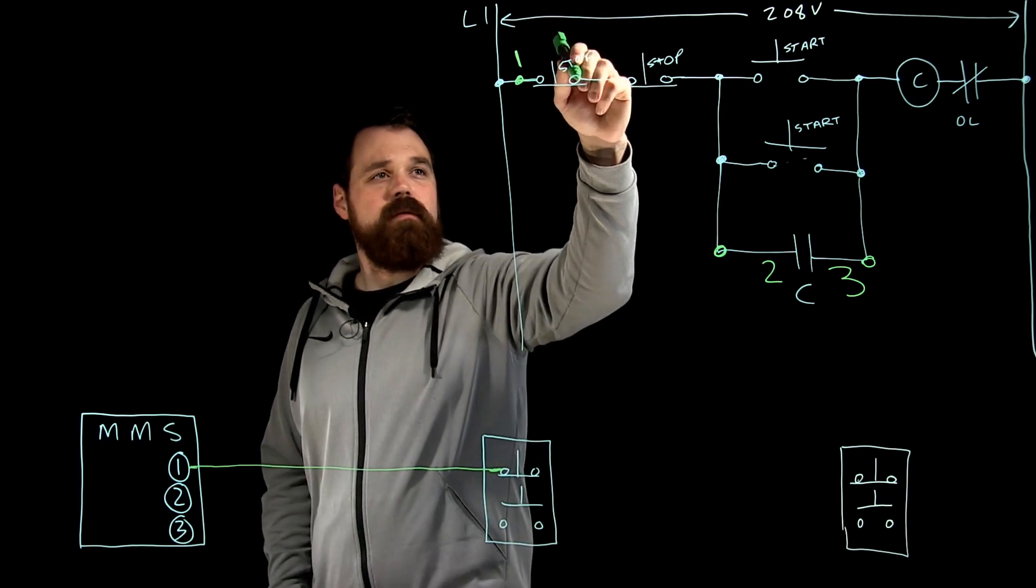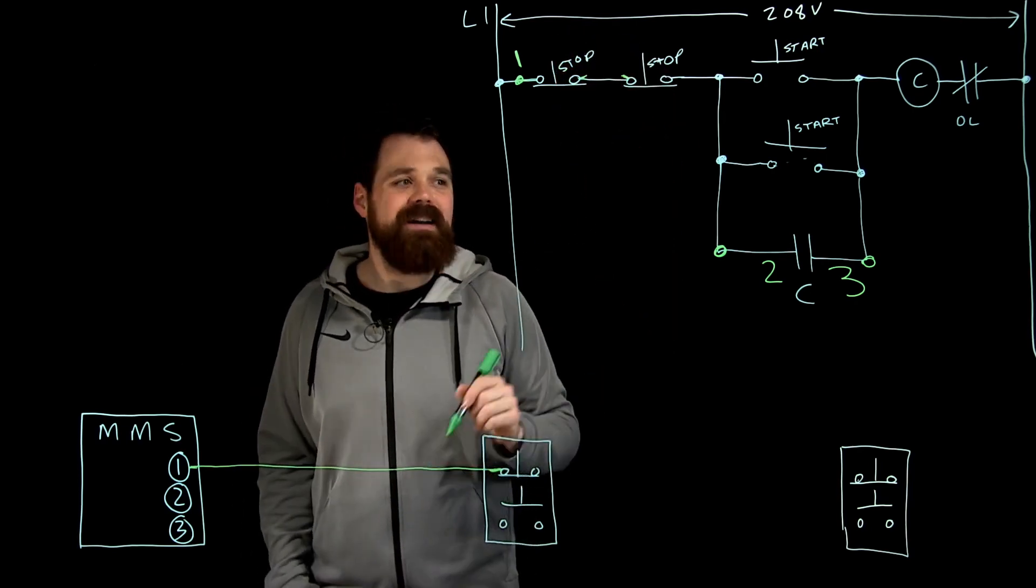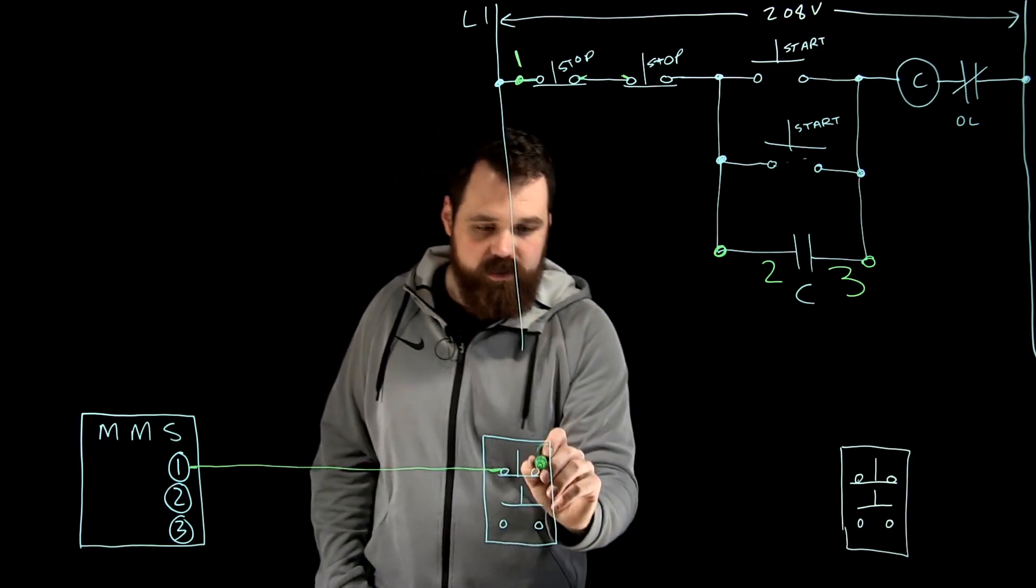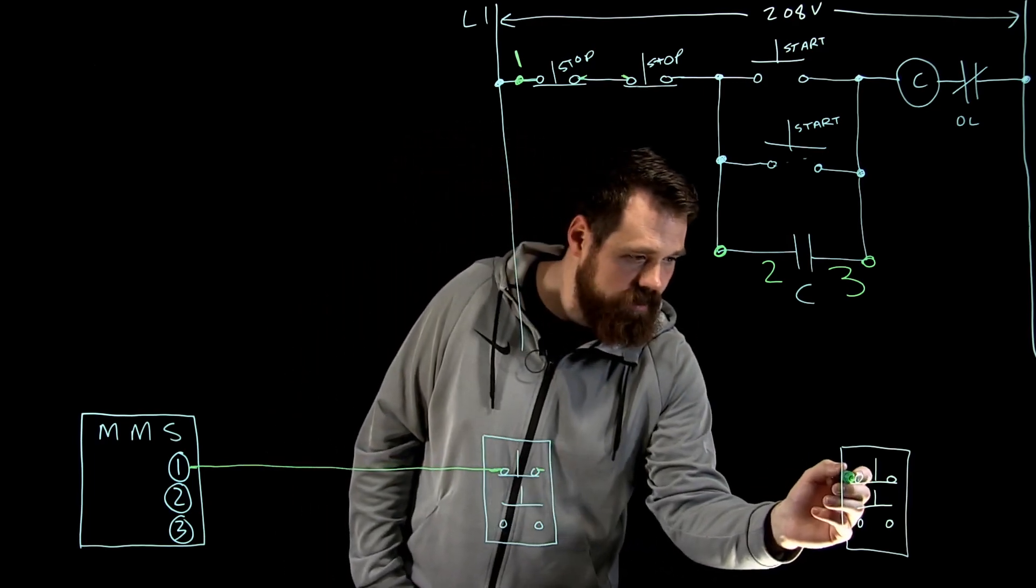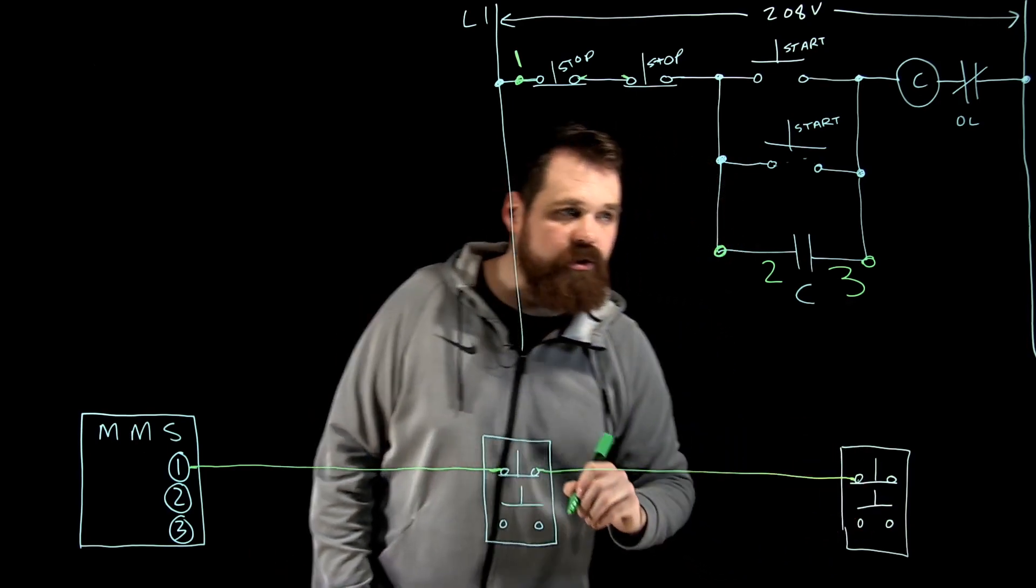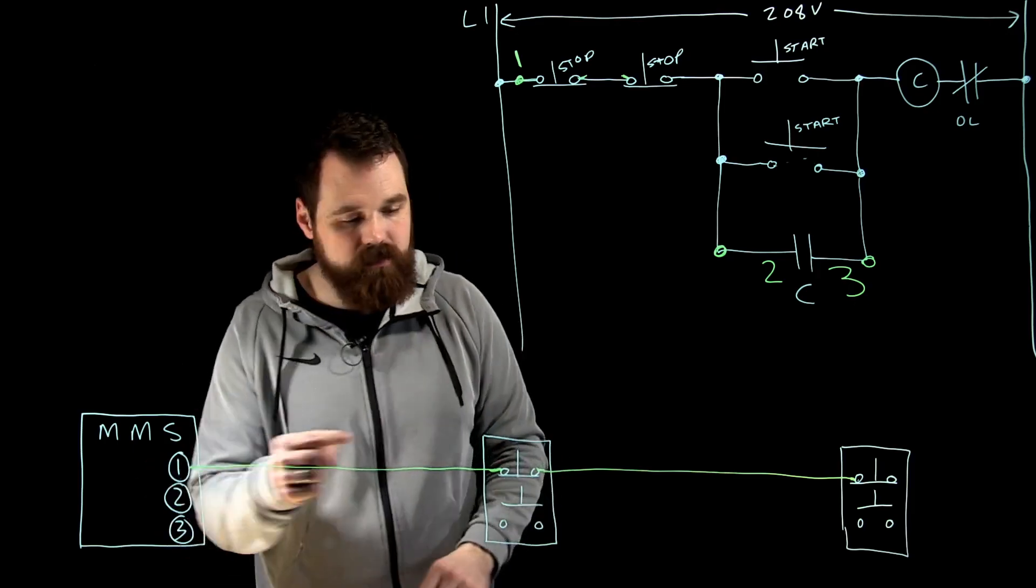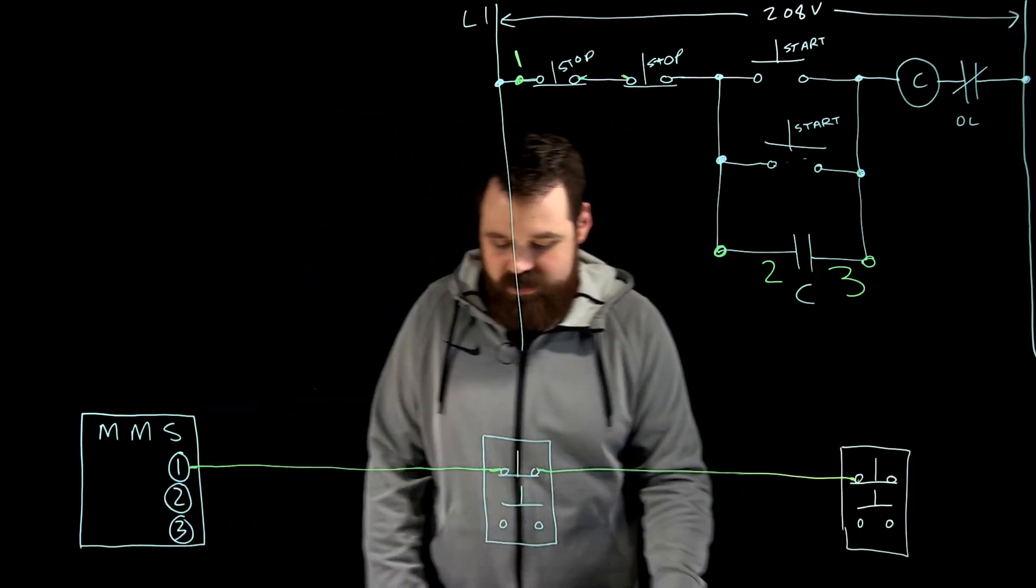Then I'm going from the right side of that stop button to the left side of my next stop button. So right side to left side and I make that connection. So now I've put both of those stop buttons in a series connection.